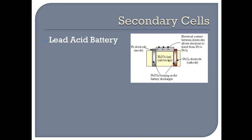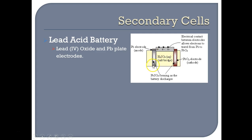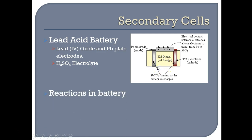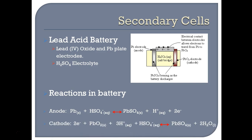Let's zoom in on the secondary cells. The first is the lead-acid battery — the battery we all have in our cars. Our electrodes are made out of lead-4 oxide (PbO₂) and solid lead. We're going to use sulfuric acid as the electrolyte. When we discharge the battery, lead-2-sulfate (PbSO₄) is going to form at both electrodes. At the anode, lead reacts with the bisulfate ion to produce lead-2-sulfate, a hydrogen ion, and a pair of electrons. At the cathode, those electrons are added to the lead-4 oxide with hydrogen ions and bisulfate to produce lead-2-sulfate and water.